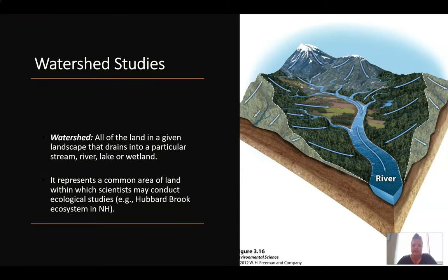What is a watershed? When we study watersheds, these are the land in a given landscape that drains into a particular stream, river, lake, or wetlands. Here is an example of a watershed where there are several different drainages off these mountain tops, and it looks like they all pretty much feed into this main river.